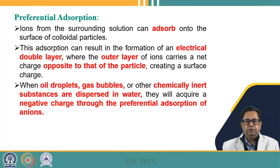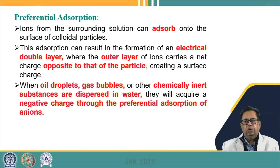Preferential adsorption can also lead to charge development. Ions from the surrounding solution can adsorb onto the surface of colloidal particles, resulting in electrical double layer formation where the outer layer of ions carries a charge opposite to the particle charge. For example, oil droplets, gas bubbles, or chemically inert substances dispersed in water may develop a negative charge through preferential adsorption of anions present in the solution.